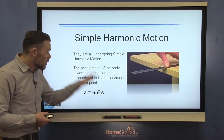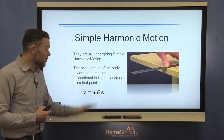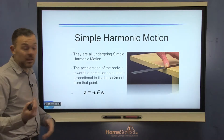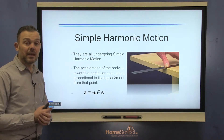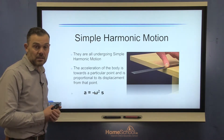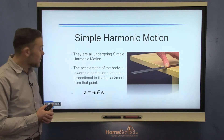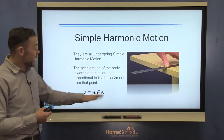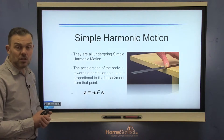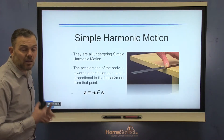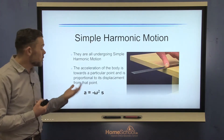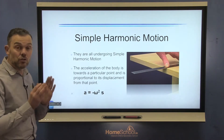We can relate all that to this formula: acceleration equals negative omega squared times s. Omega is our angular velocity, and s is the displacement. That little minus sign — don't worry too much about it; we can use the modulus or the magnitude.